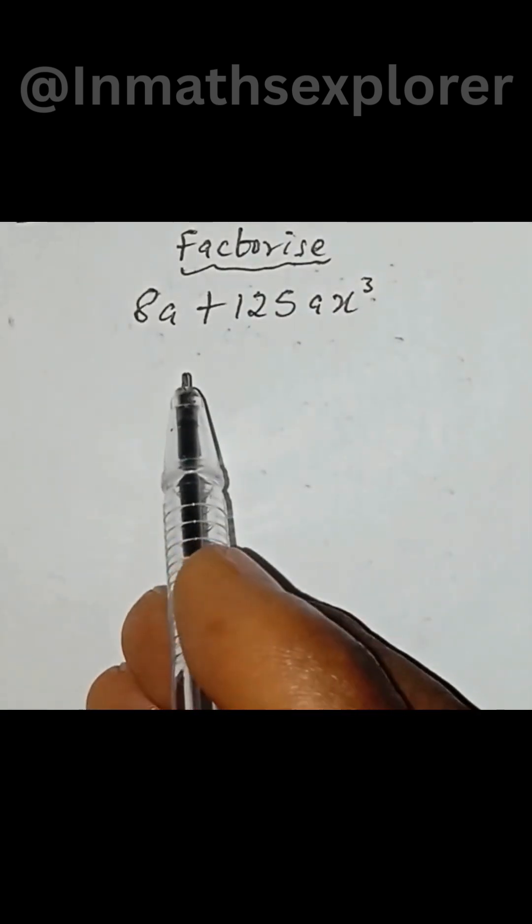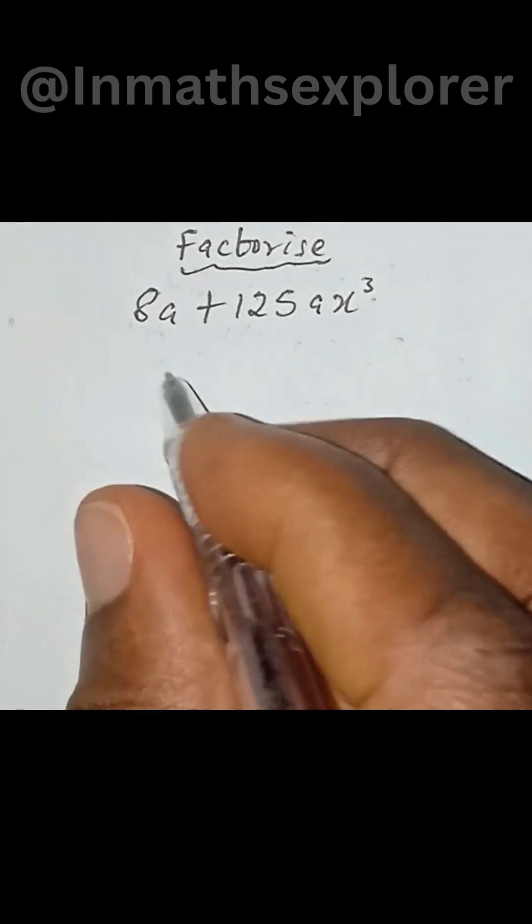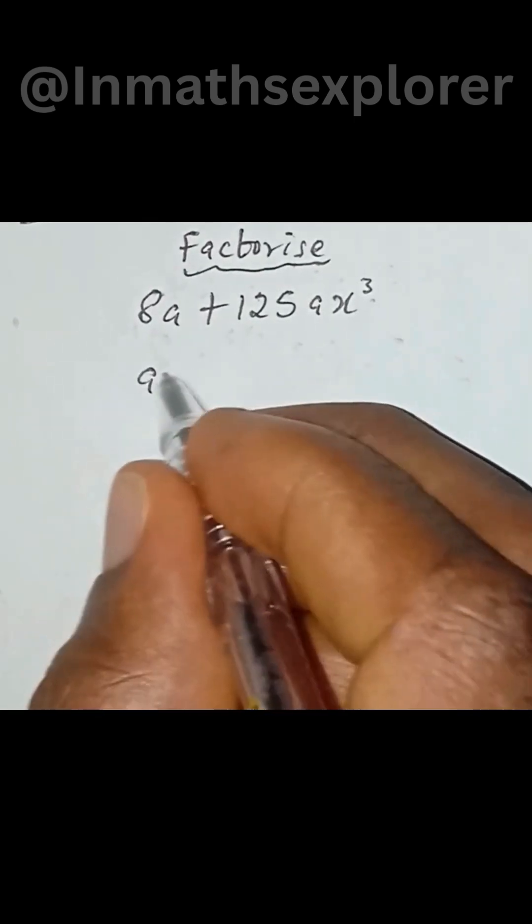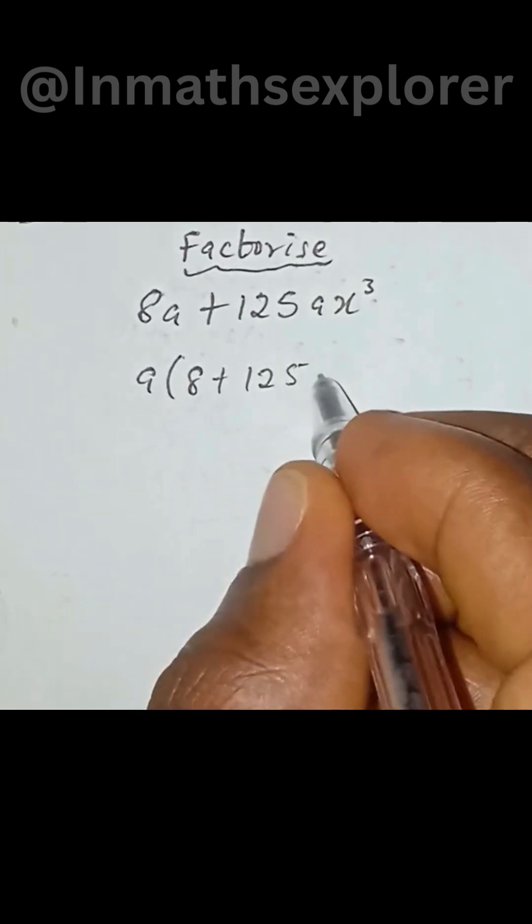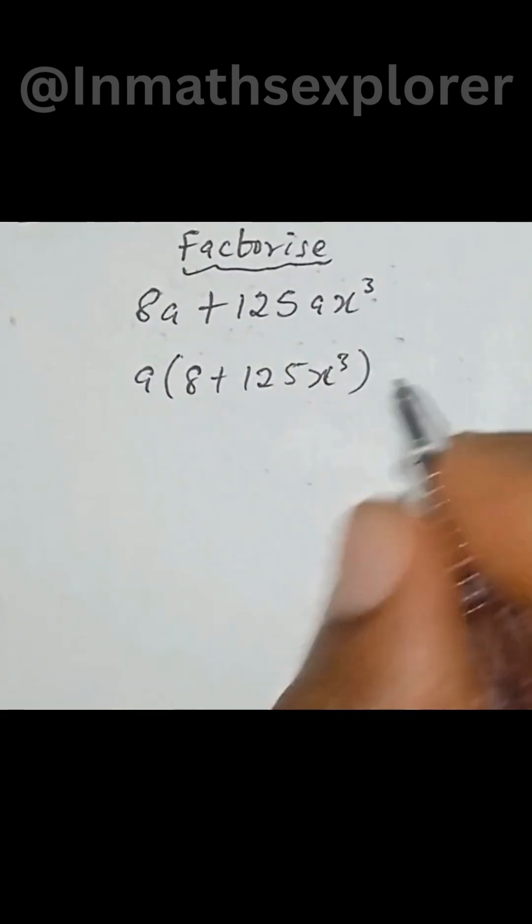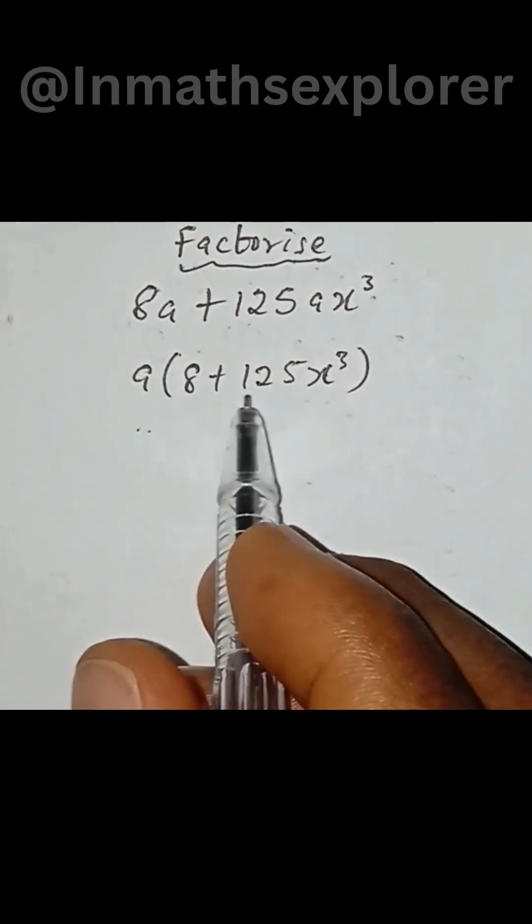So let's factorize this algebraic expression. To factorize this algebraic expression, the first step is to factor out a. We have a then into brackets 8 plus 125 then x cube.